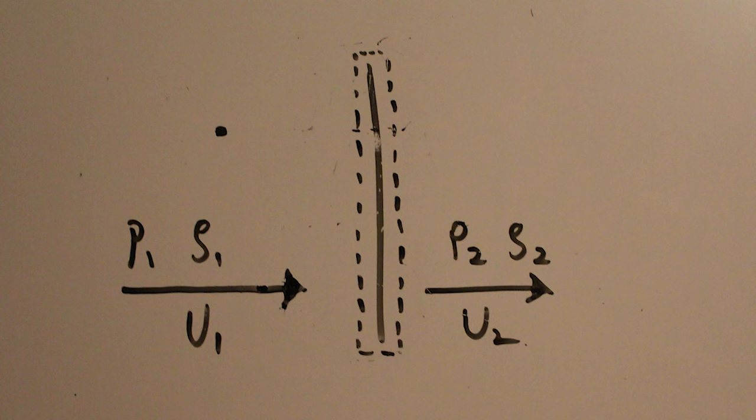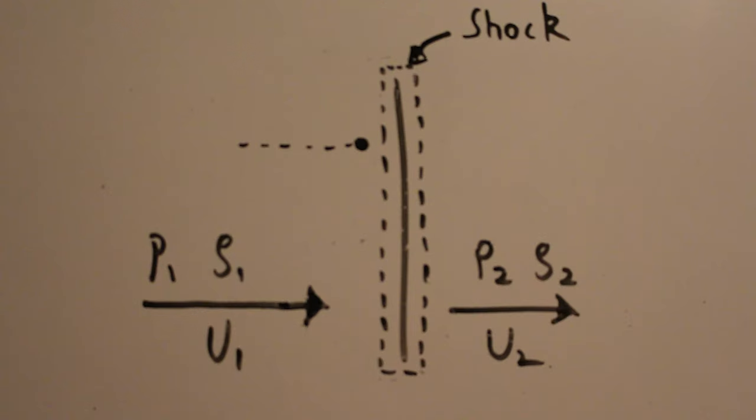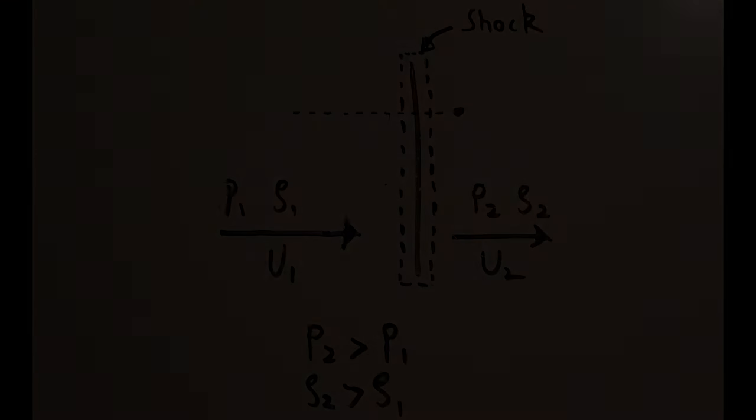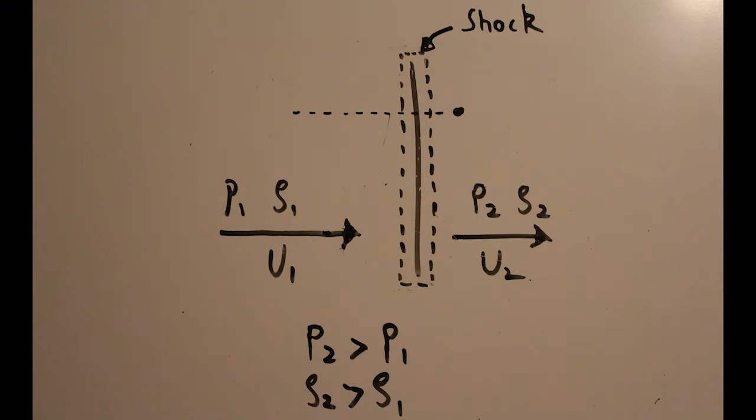A moving shock is called a shock wave, which is very thin, somewhere in the order of 200 nanometers. It is in this region that the fluid undergoes sudden change in properties. The Mach number decreases across the shock wave along with a sudden rise in pressure, density, and temperature. A shock wave is also an irreversible process because of the extreme reactions produced by the collision of the particles.